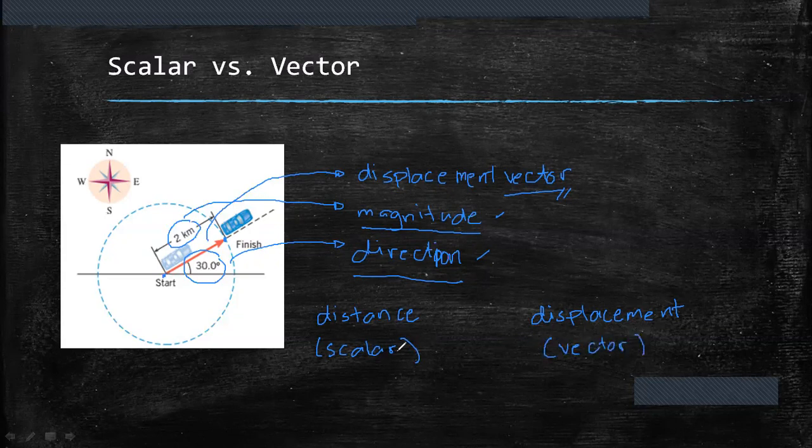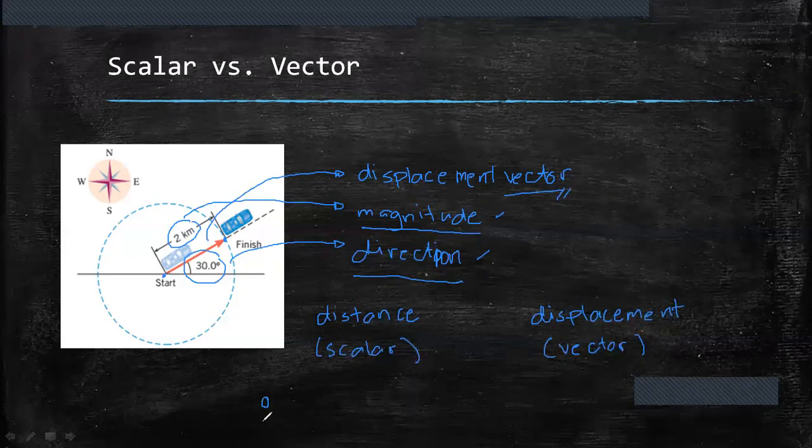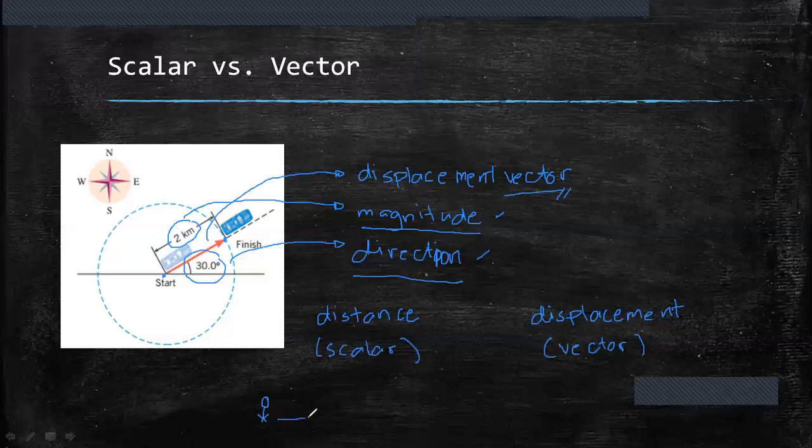So the difference is that distance only covers how far or the length between two points. Let's say Mario walks 20 meters to the east and 10 meters to the north. So the total distance you travel is 30 meters.